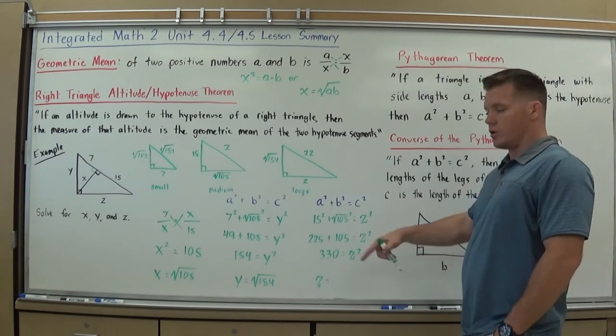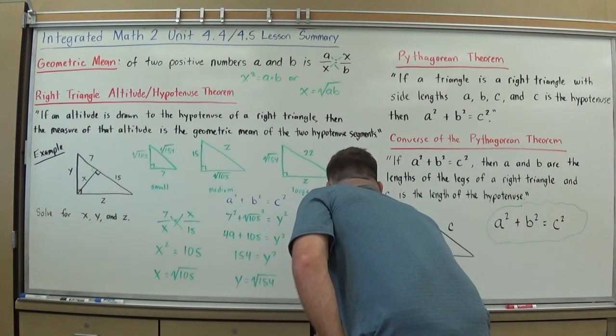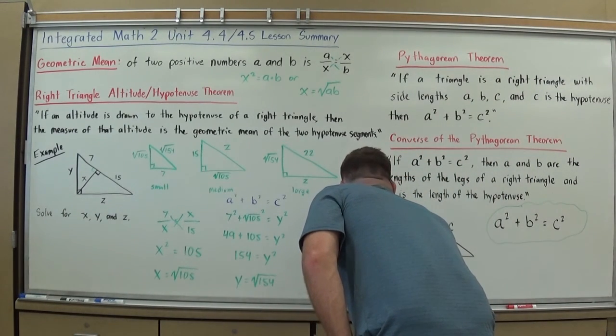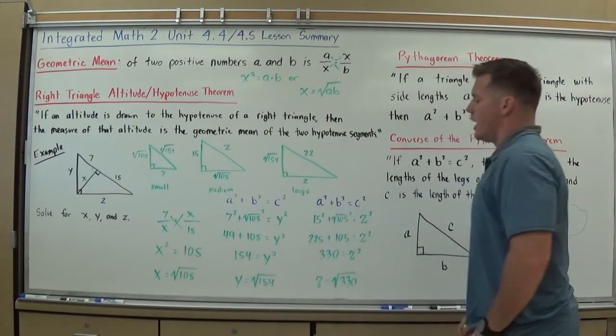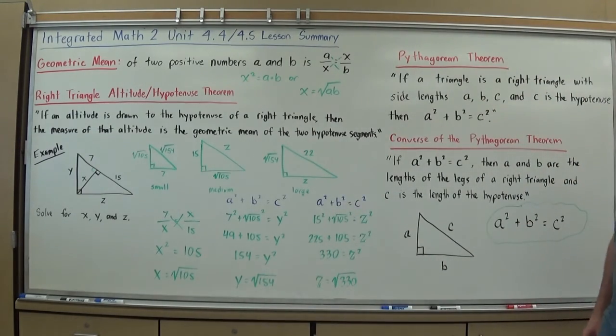And I take the square root of both sides. Again, to undo a square, you take square root, inverse operation. And I get square root of 330. And now I have all the answers for the missing values.